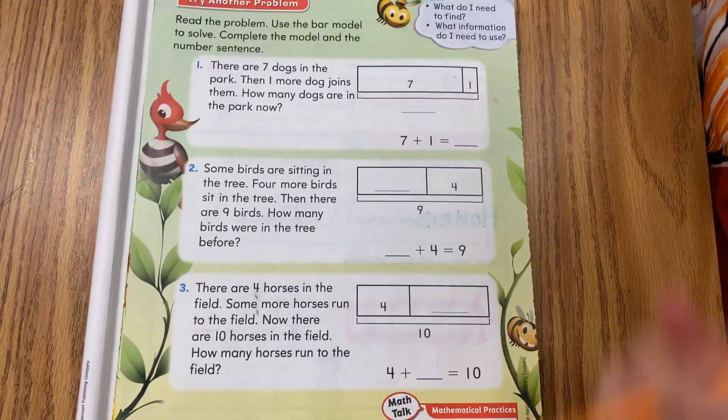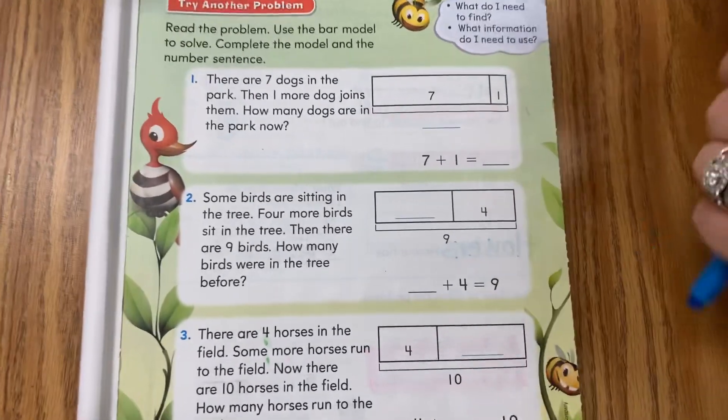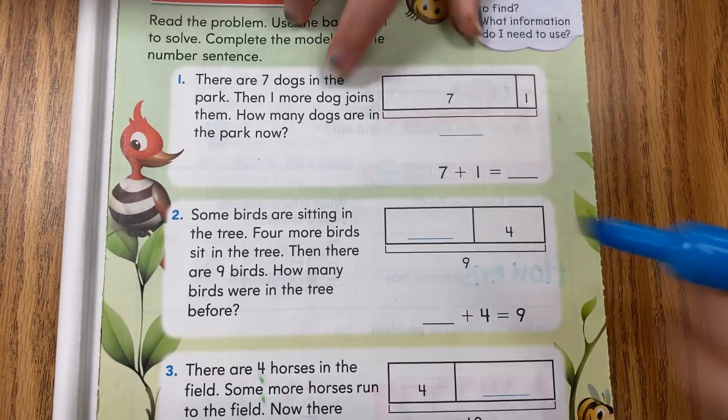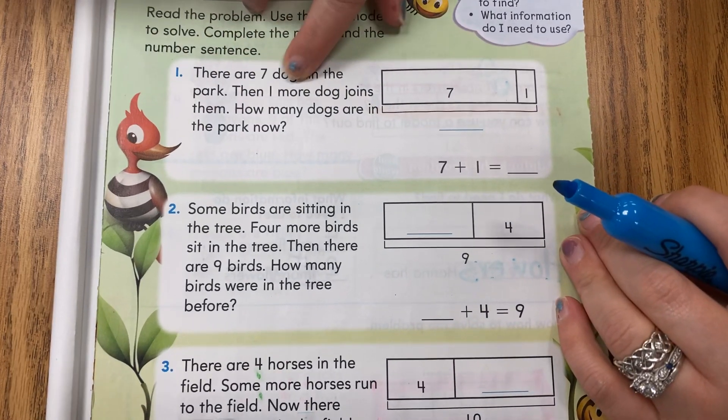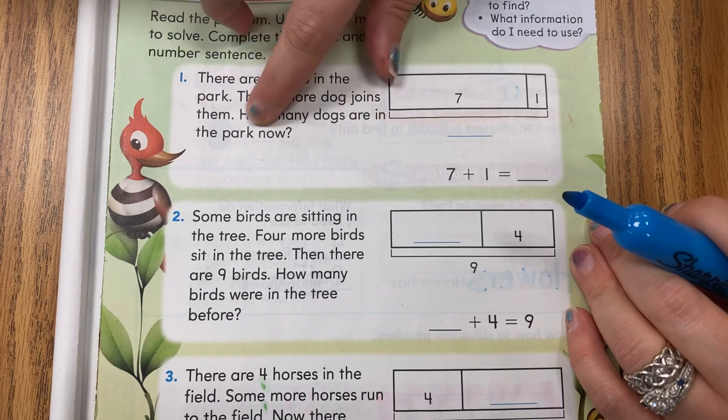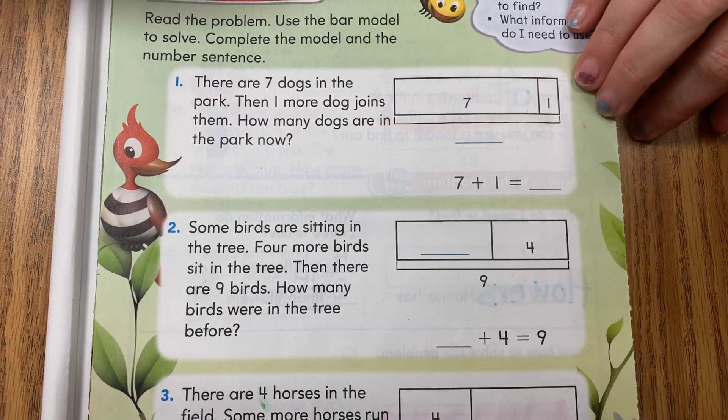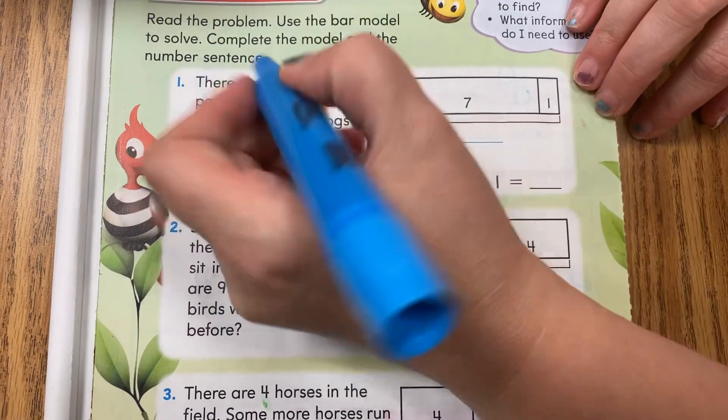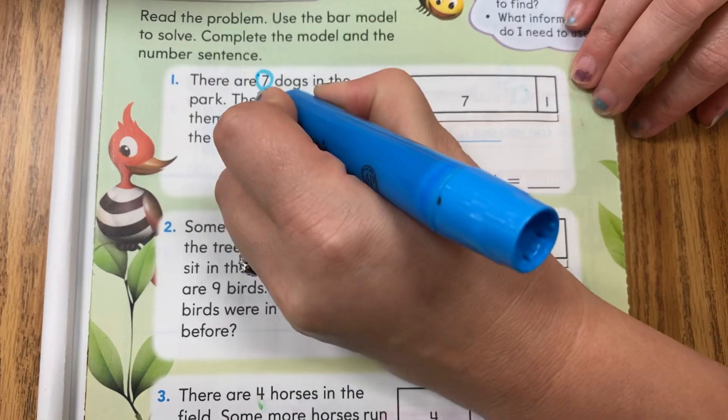We're going to keep going. It's going to take a few minutes, my friends. You're going to flip. All righty, here we go. Starting with our colors: There are seven dogs in the park, then one more dog joins them. How many dogs are in the park now?